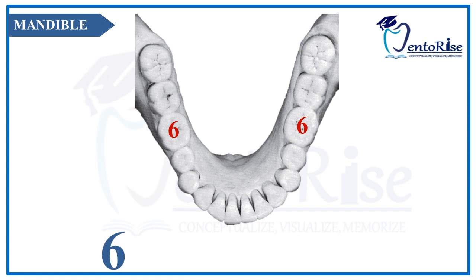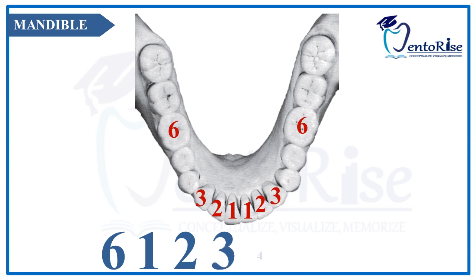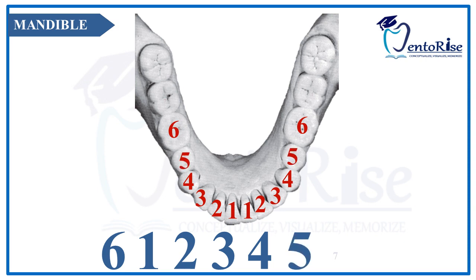After the permanent mandibular first molar, the mandibular central incisor erupts. Therefore, the eruption sequence will go like 6, 1, then the lateral incisor — 2, then the canine — 3, then the first premolar — 4, then the second premolar — 5, then the second molar — 7, and the last third molar — 8.